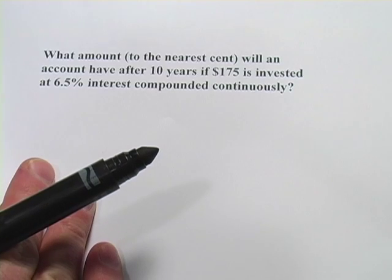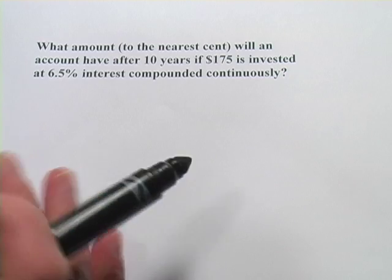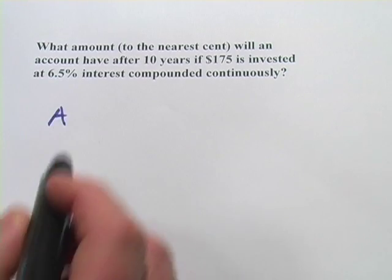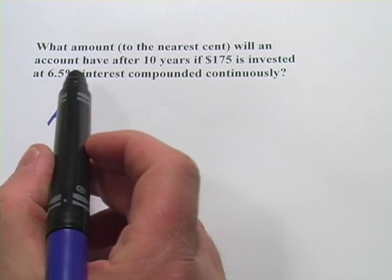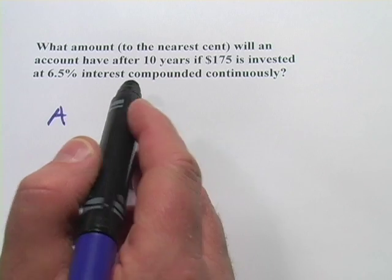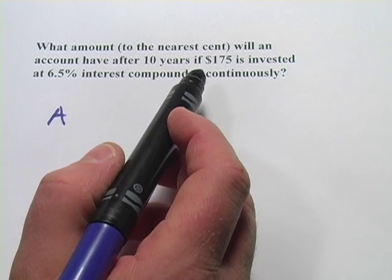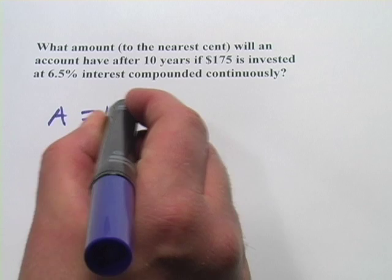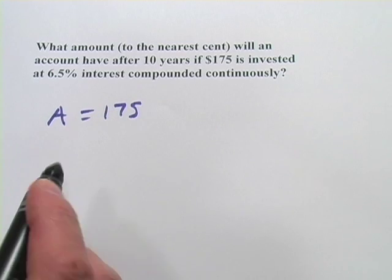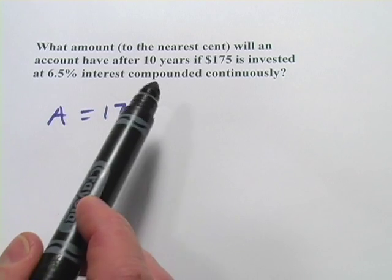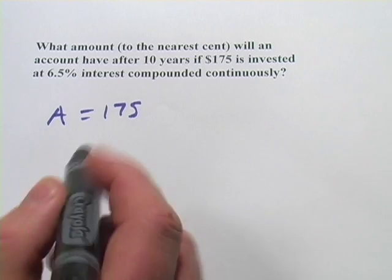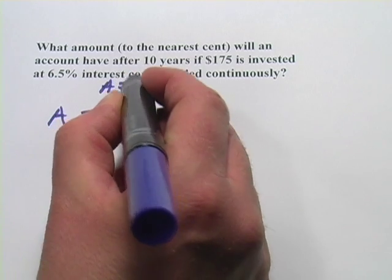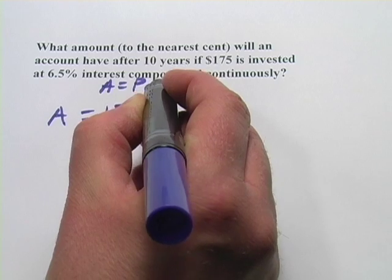Let's try another one. This one says what amount. So we're going to look for A. To the nearest cent, will an account have, after 10 years, if $175 is invested, so that's our principal, 175, at 6.5% interest, compounded continuously. Okay. So this is the PERT formula, A equals P times E to the RT.